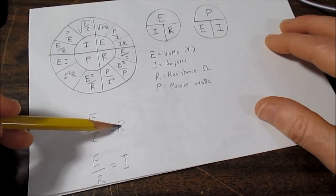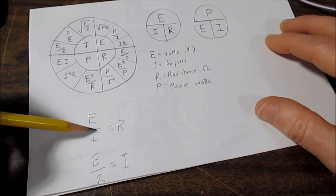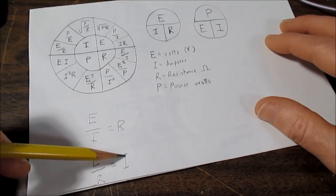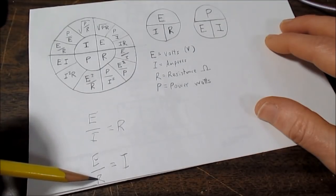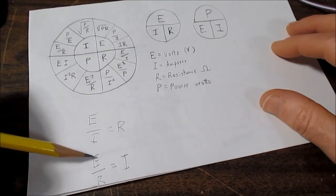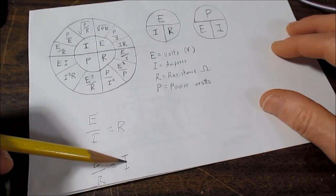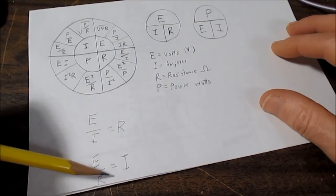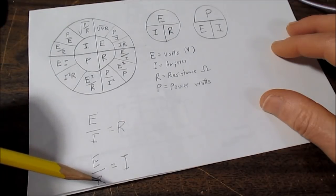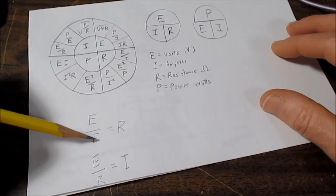Always remember that voltage is on top here. So if you're trying to find R, of course I is going to be in the denominator. And if you're trying to find I, or current, the resistance will be in the denominator. And if you're trying to find E, or the voltage, it's just I times R, or same difference, R times I.